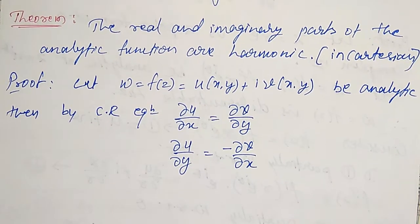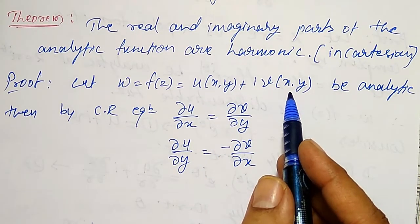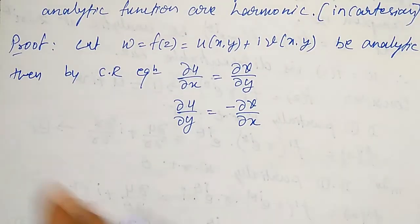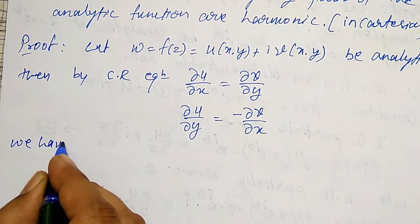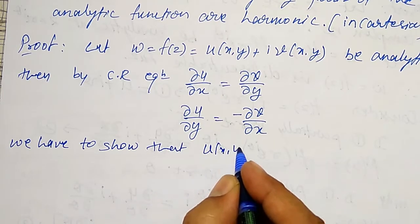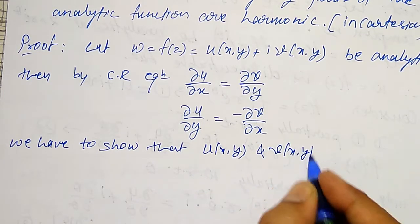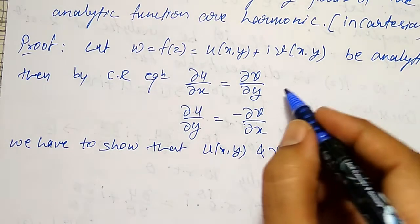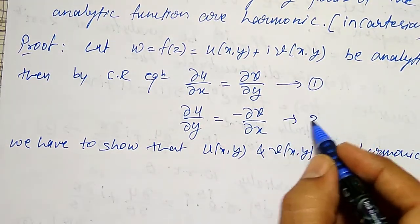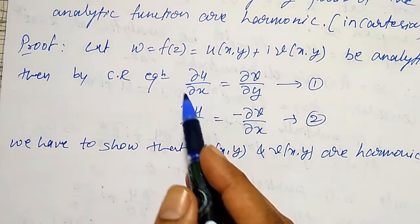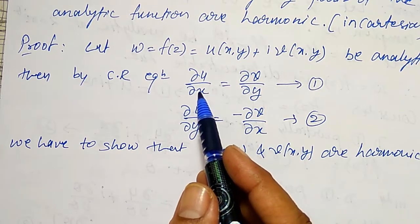Now what I have to show is that u(x,y) and v(x,y) both satisfy the Laplacian equation, meaning both u and v are harmonic. To show that u(x,y) is a harmonic function, I need to show dou²u/dou x² + dou²u/dou y² = 0. There is already one partial derivative; I want one more partial derivative with respect to x.